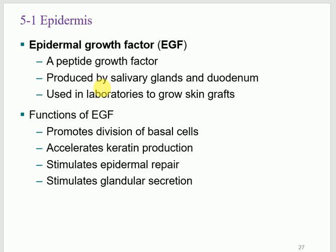Epidermal growth factor, or EGF, is the factor that stimulates the epidermis to grow. It is produced by the duodenum and salivary glands. EGF promotes division of the basal cells, which contain stem cells. Stimulating stem cells causes them to work faster, producing more layers. EGF can also accelerate keratin production into the keratinocytes — the major cells of the epidermis.